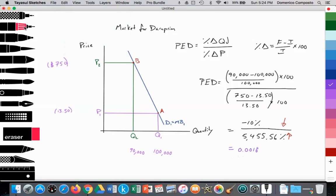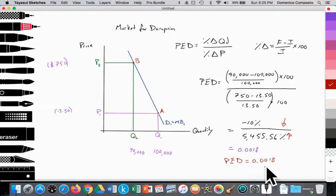for this drug, when calculated, is equal to 0.0018. So it's less than 1, it's inelastic.